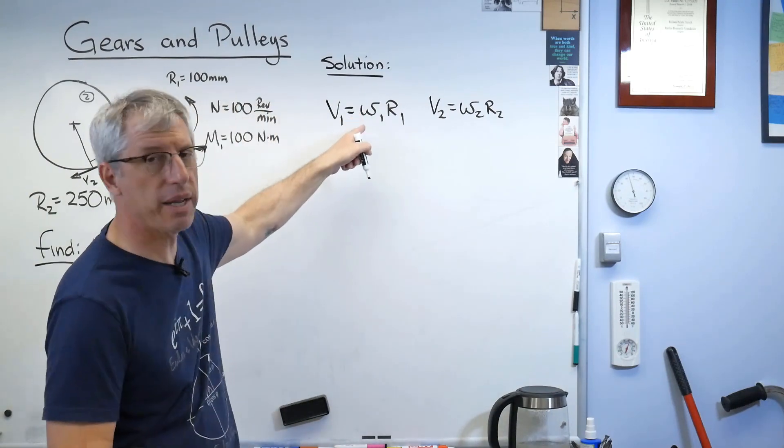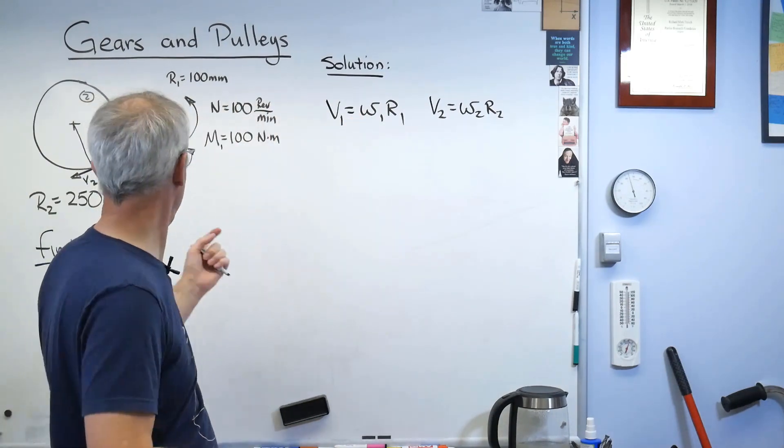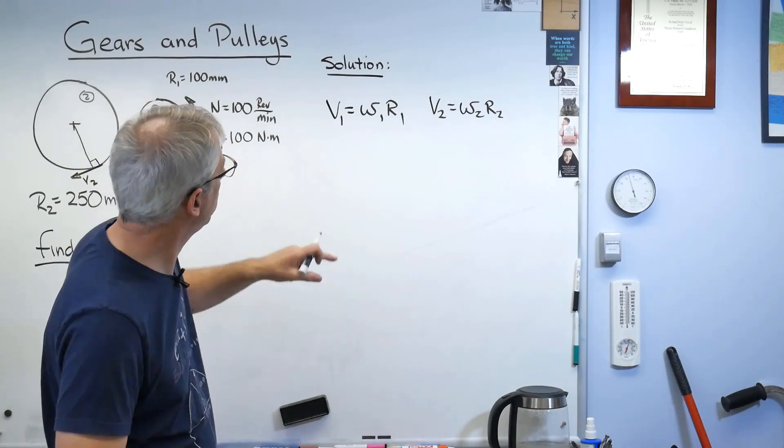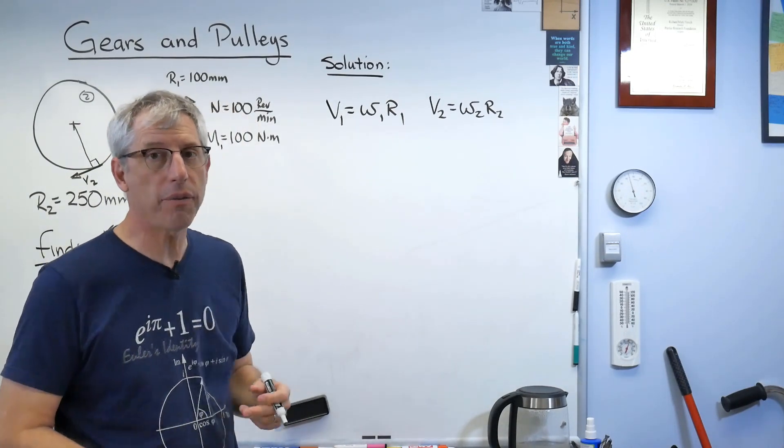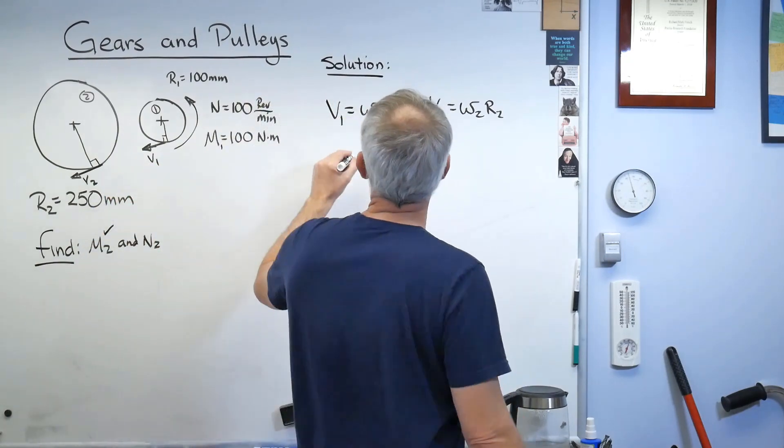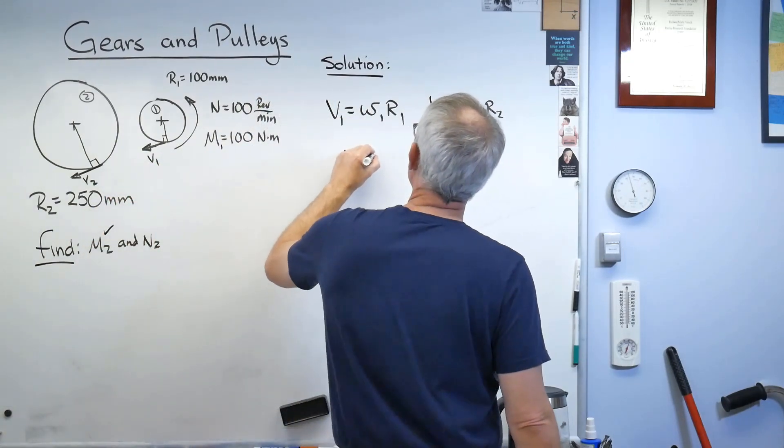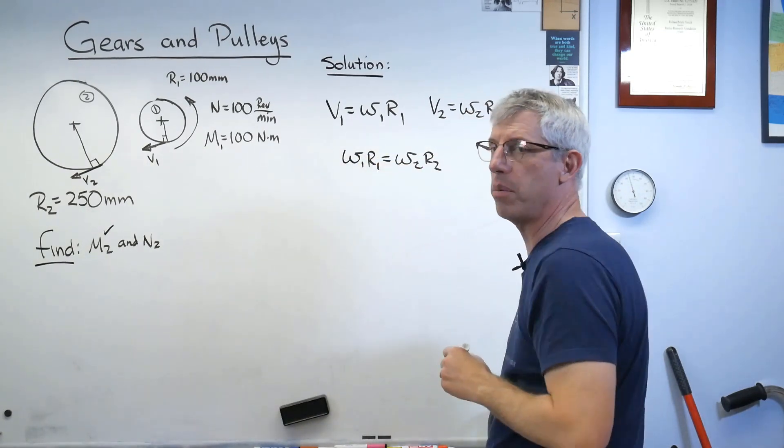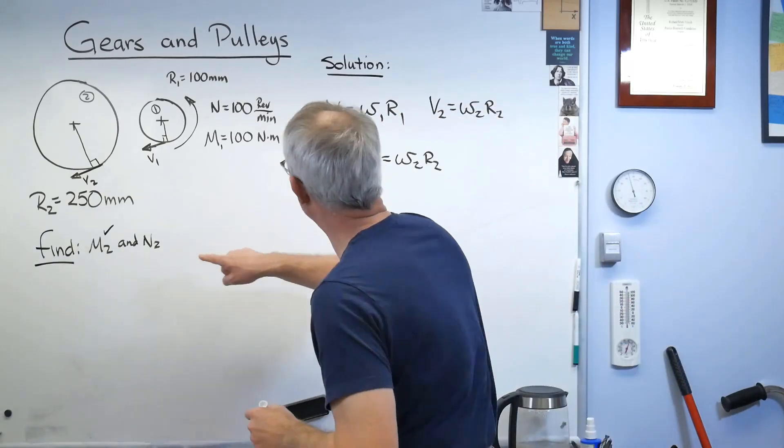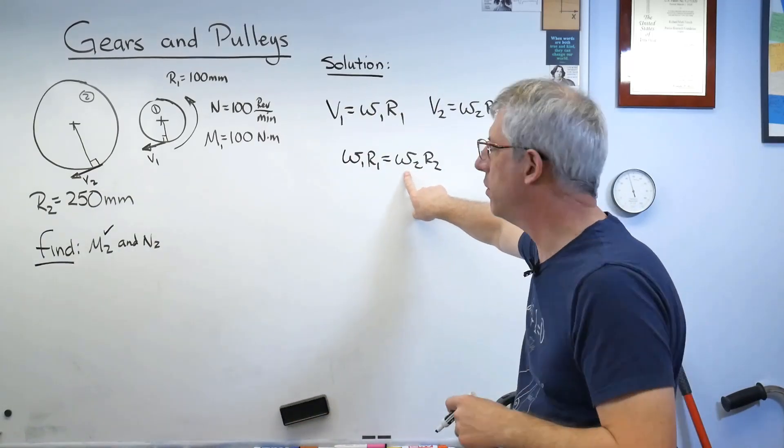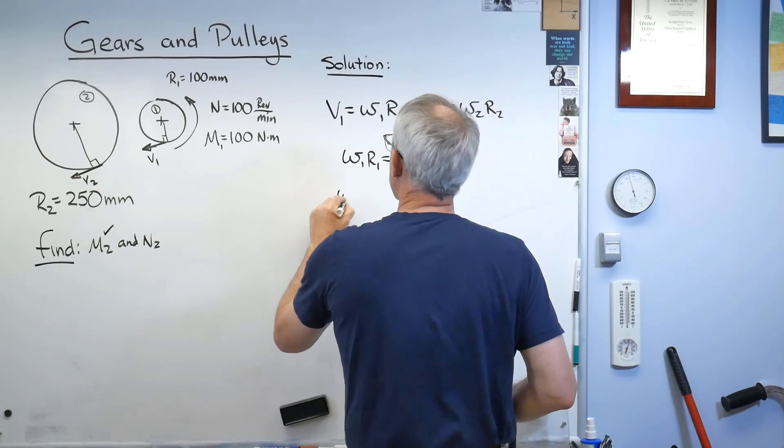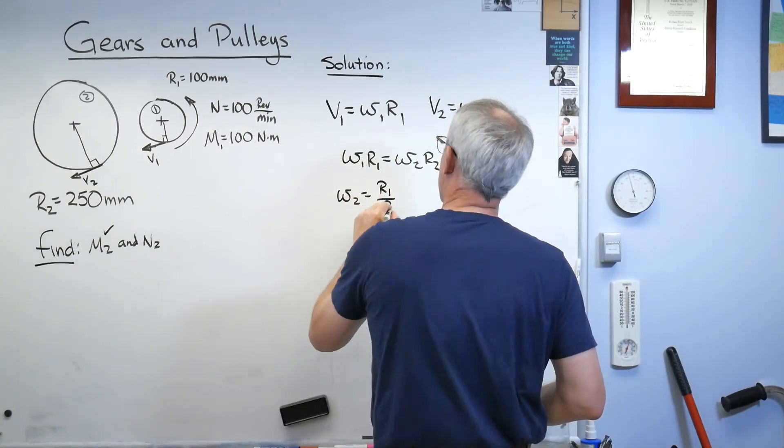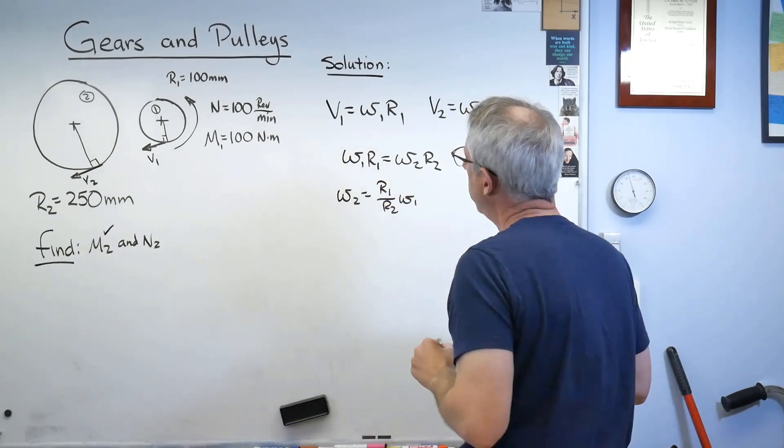How do you express velocity as a function of rotation? V1 is omega 1 R1 and V2 is omega 2 R2. Now, omega is in radians per second, and I gave it to you in revs per minute, but that's just a units problem. We'll fix that here in a minute. Well, we know V1 and V2 have to be the same because they're connected by an inextensible belt. So that means that omega 1 R1 is omega 2 R2. No problem. Which one of these are we trying to solve for? Well, I need N2, but that's basically omega 2 with a multiplier on it. So omega 2 is...